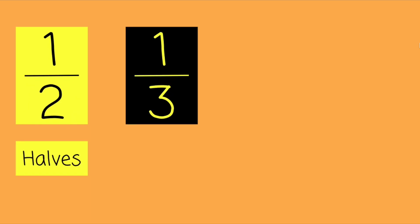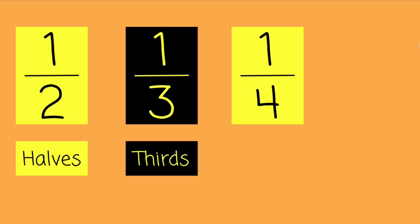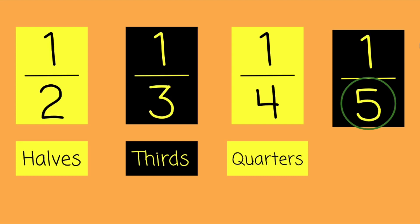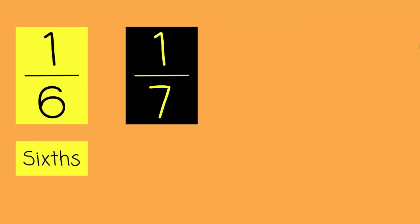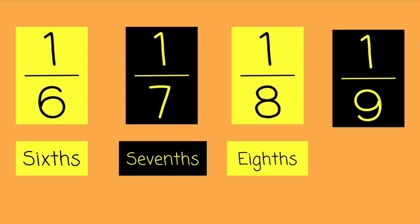Let's talk about the names of the denominators. When there's a two on the bottom of a fraction, we refer to it as half. When there's a three on the bottom, we call it thirds or a third. When there's a four on the bottom, we call it quarters — think four quarters make one whole dollar. And when there's a five, we call that fifths. Sixths, sevenths, eighths, ninths, and it continues like that — tenths, elevenths, twelfths, etc.